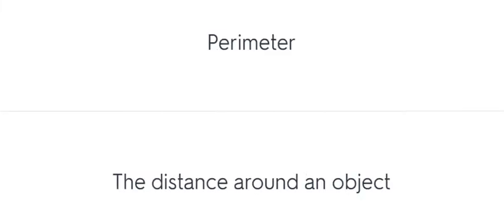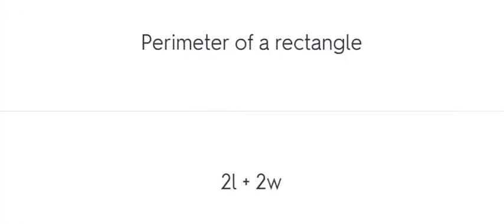Perimeter. The distance around an object. Perimeter of a rectangle: 2L plus 2W.